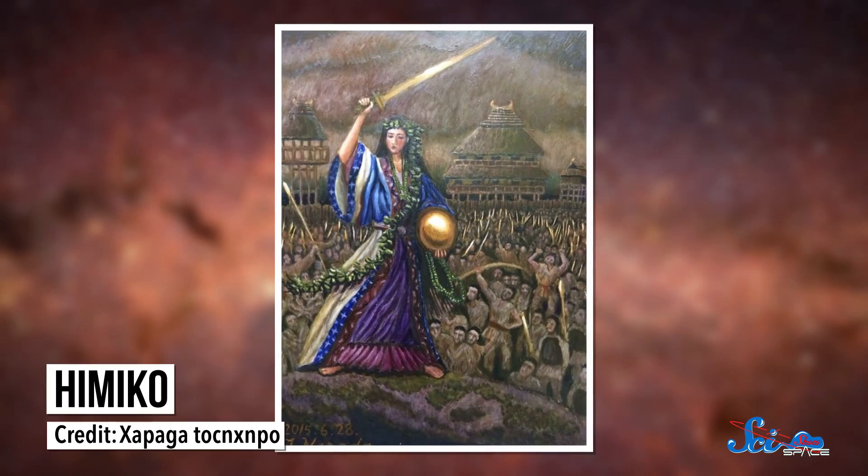Himiko was discovered back in 2009 by a team of Japanese astronomers who named it after a third-century Japanese queen. But even though they detected it using a telescope in Hawaii, Himiko's light originally wouldn't have been able to make it through our atmosphere.